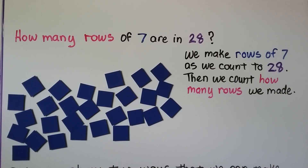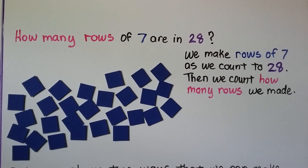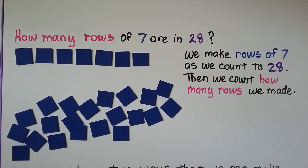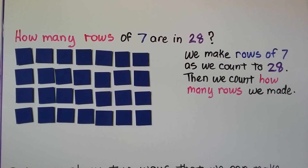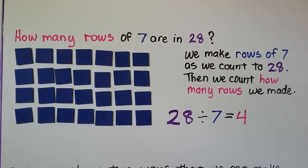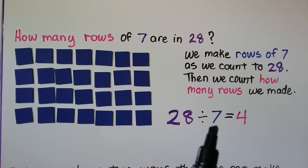How many rows of 7 are in 28? We make rows of 7 as we count to 28. We have 28 counters already counted out, and we make rows of 7: 1 row of 7, 2 rows of 7, 3 rows of 7, 4 rows of 7. We count how many rows we have — we made 4. Our equation is 28 divided by 7, that's how many were in each row, is equal to 4 — that's how many rows we made.